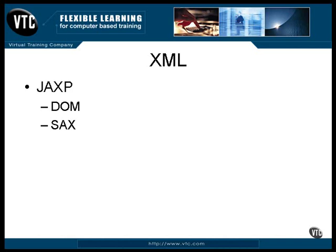SAX is the Simple API for XML. It can be used to read an XML document as a stream of tags. You can use it to scan sequentially through a document to find what you're looking for. With this one, it's up to your program to keep track of the nesting and where you are in the document.